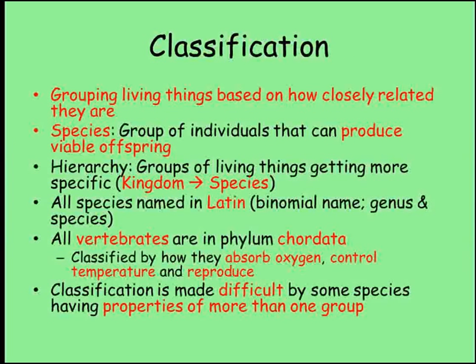Classification is all about grouping living things by how closely related they are. A species is a group of individuals able to produce viable offspring, although this definition is not perfect. It is a hierarchy running from kingdoms — the largest groupings, of which there are five — through phylum, class, order, family, genus and finally species. Each organism has a two-part Latin name consisting of the genus and species to ensure consistency. Vertebrates all belong to the phylum chordata, and the five vertebrate groups are organised according to how the animals absorb oxygen, reproduce and control their body temperature. Sometimes animals have properties of more than one group, making accurate classification very difficult.